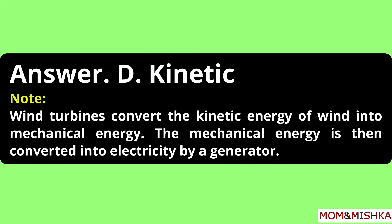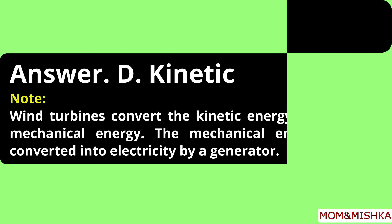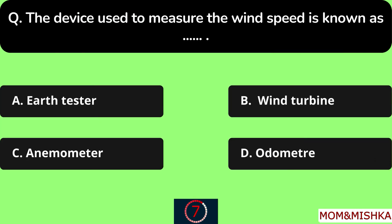Kinetic energy, option D. The wind turbines convert the kinetic energy of wind into mechanical energy, and then the mechanical energy is converted into electricity by a generator. The device used to measure wind speed is known as blank.